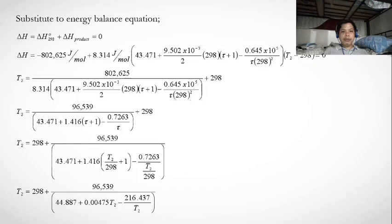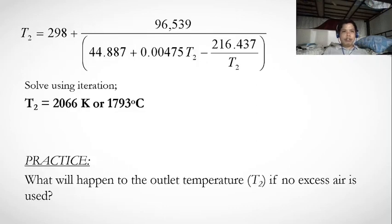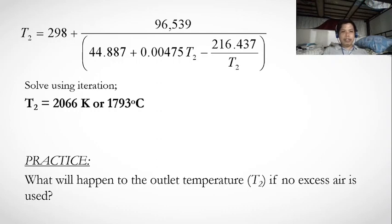This equation is solved using the method of successive substitution. Since the final temperature is greater than 298 K, we start with an initial guess, say T₂ = 500 K. After several iterations, the final answer converges to T₂ = 2066 K, or 1793 degrees Celsius.